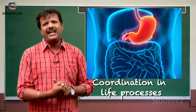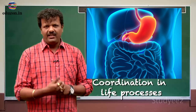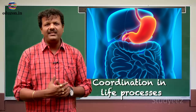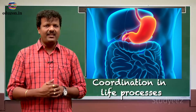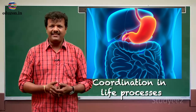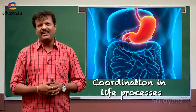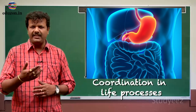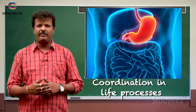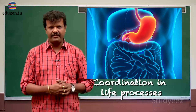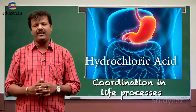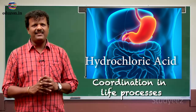When the stomach receives the information that food is about to enter into it, it immediately stimulates the gastric glands that are present in our stomach. When the gastric glands receive this signal, they produce gastric juice. This gastric juice contains dilute HCl.